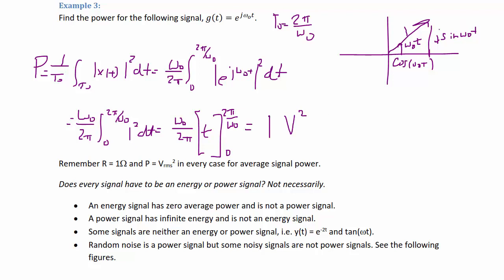Some reminders: R = 1 ohm and P = V_rms² in every case for average signal power. Also, does every signal have to be an energy or power signal? Not necessarily. An energy signal has zero average power and is not a power signal. A power signal has infinite energy and is not an energy signal. As we said before, you can't have a signal that's both — it's either power, energy, or neither.